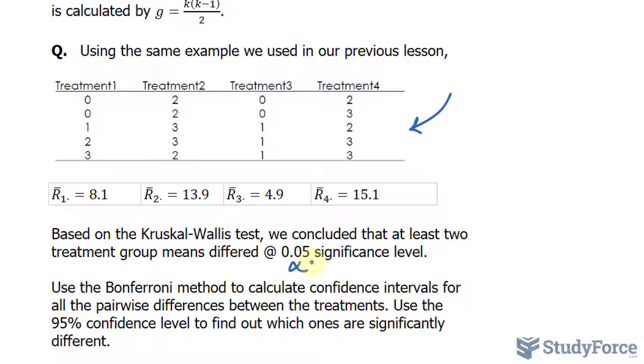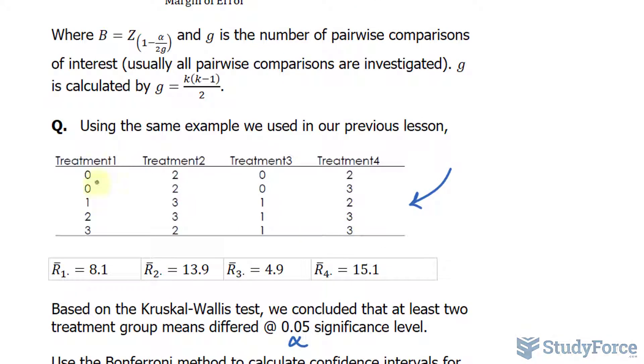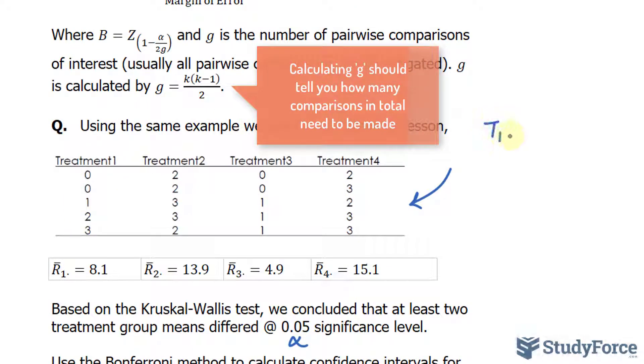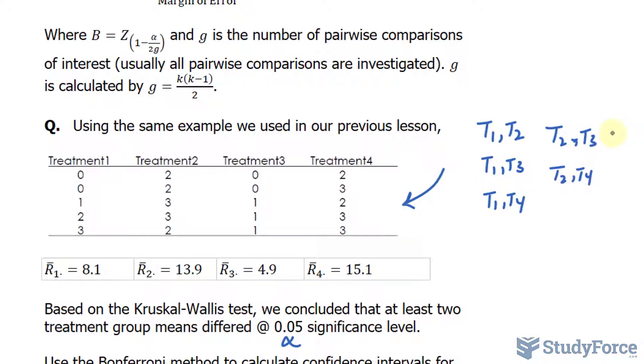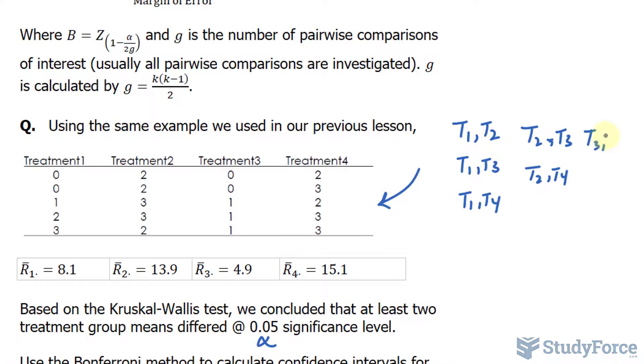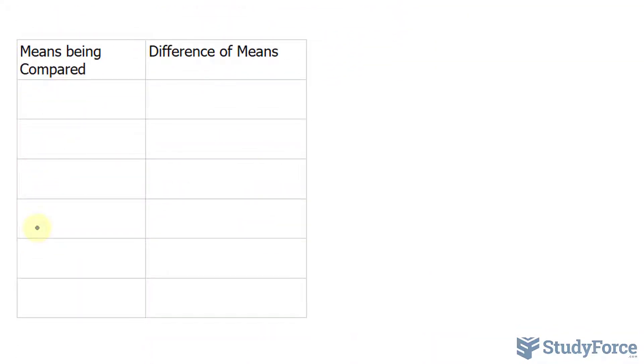Use the 95% confidence to find out which ones are significantly different. Whenever you do this test, and depending on how large your data is, it's always a good idea to organize your work in a table. Notice I've started this table out for you, but you should do this on your own. The first column tells us the means being compared. We have to compare each of these treatments two at a time. For example, I need to compare treatment one and treatment two, treatment one and treatment three, treatment one and treatment four, treatment two and three, treatment two and four, and finally treatment three and treatment four. This covers all of them. So I'll rewrite this in each of these cells found in this table to organize my work.